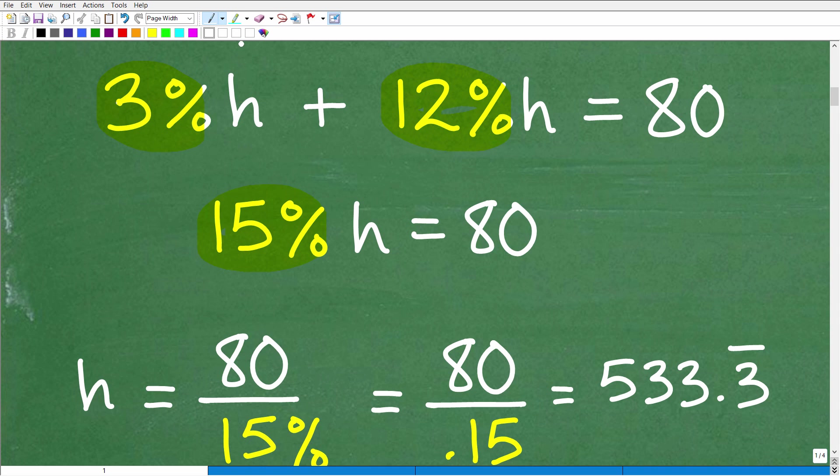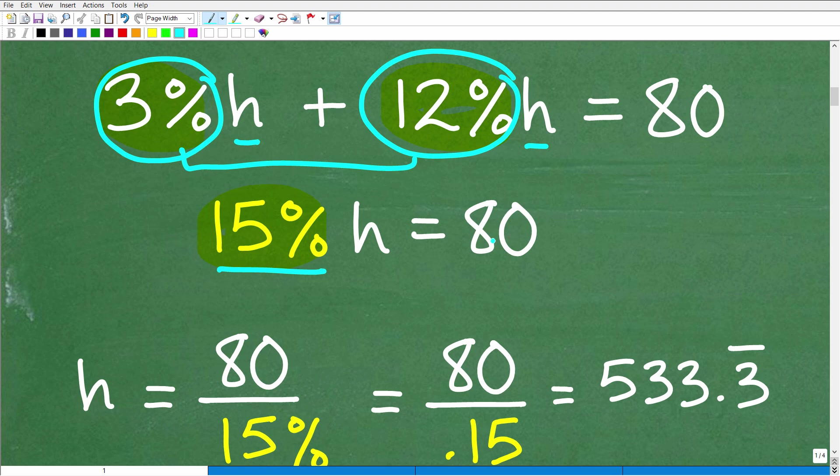So this is an h right here and this is an h. So knowing that 3% and 12% I can write as decimals, I can simply just combine these two values and I can call this 15% h. So I'm combining like terms is equal to 80.